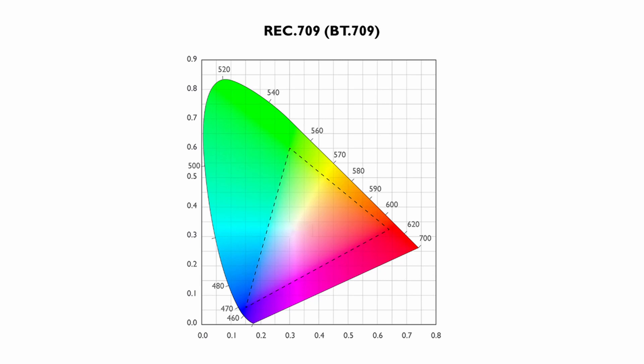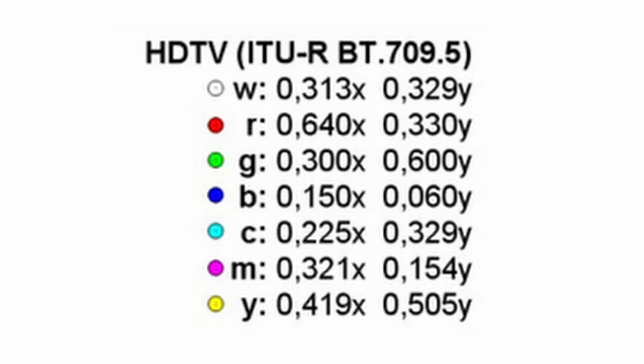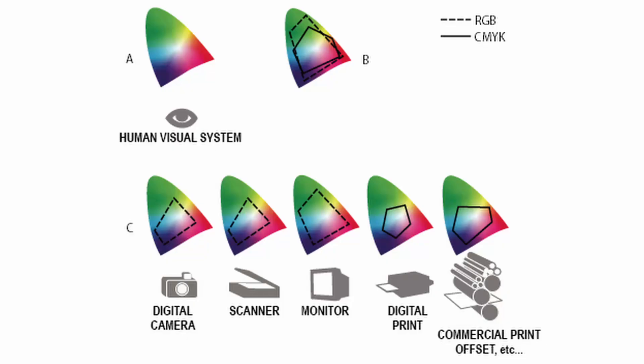Rec.709 is one of the main standards for color gamut. Rec.709 was published in 1990 with a color scale that served to define colors for the then-dominant high-definition television market. Today, Rec.709 is the basis of color science in our displays, including TVs, monitors, smartphones, etc. But here's the trick: Rec.709 is a standard for monitors, not cameras — although in practice they may be more or less equivalent.